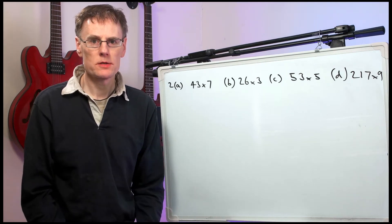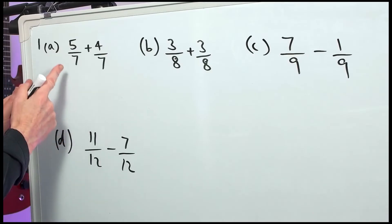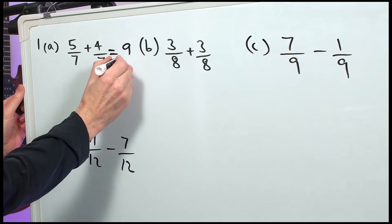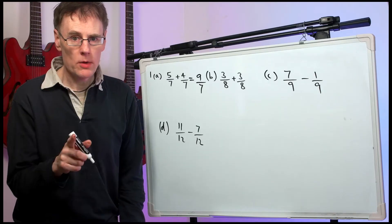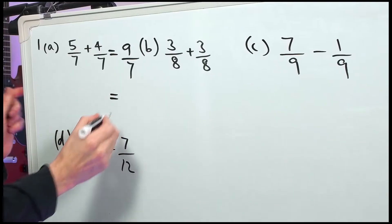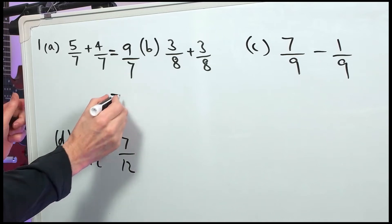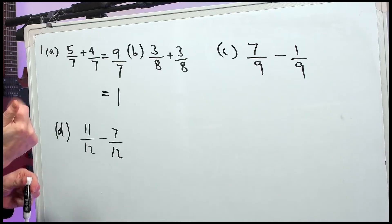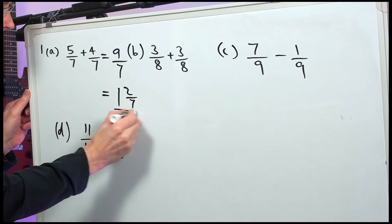Right, here are the answers to Mixed Practice 2. Number 1. 5 sevenths plus 4 sevenths makes 9 sevenths. That gives you 1 mark out of 2. Now, that's a top-heavy fraction. You need to change that to a mixed number. So we have 1, that's 7 sevenths, 8, 9, and 2 sevenths left over.